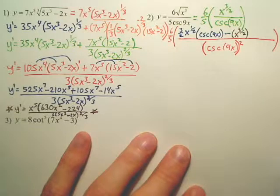Now, the derivative of cosecant. What's the derivative of secant? Secant is secant tangent. Cosecant is negative cosecant cotangent.